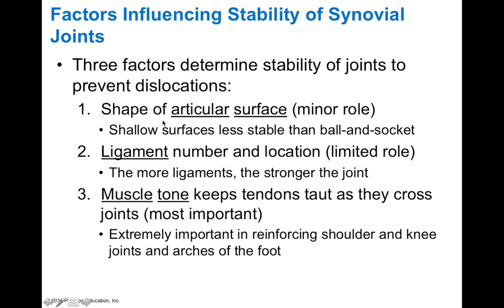The first factor is the shape of the articular surface — the shape of the bones in terms of joint stability. For the most part this has a minor role, but with ball-and-socket joints, the ball sitting in a socket-shaped bone provides some stability. The second factor is supporting ligaments — the more ligaments, the stronger the joint, though ligaments also have a limited role because they can only do so much. We have capsular, extracapsular, and intracapsular ligaments.